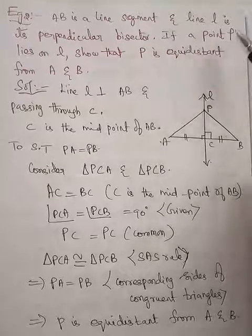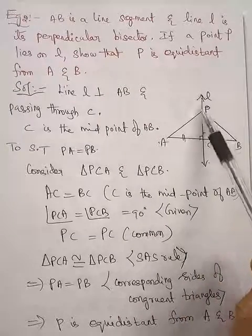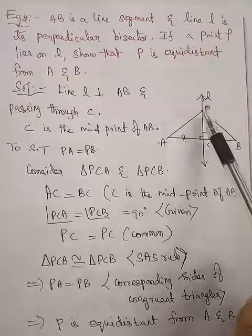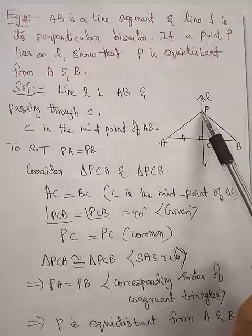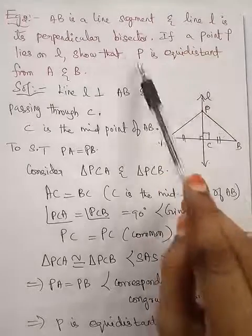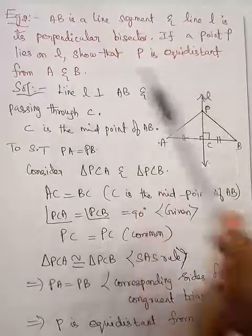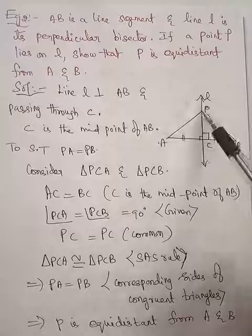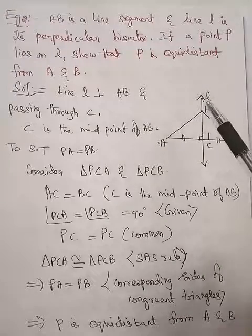If a point P lies on L, so this is line L, in the line the point P lies. Show that P is equidistant from A and B. So PA distance is equal to PB distance we want to prove. That's all.